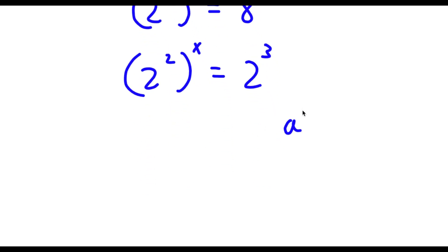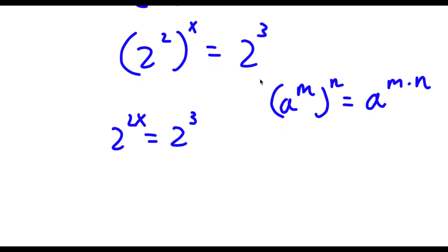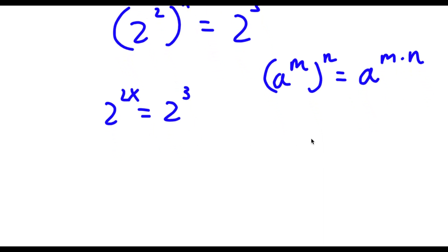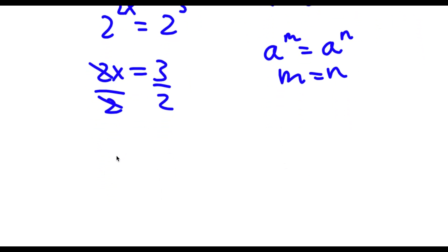If I have something in the form a to the power of m to the power of n, this is equal to a to the power of m times n. So 2 to the power of 2 to the power of x equals 2 to the power of 2x, which is equal to 2 to the power of 3. If a to the power of m equals a to the power of n, then m equals n, so 2x equals 3. Dividing both sides by 2, I get x is equal to 3 over 2.